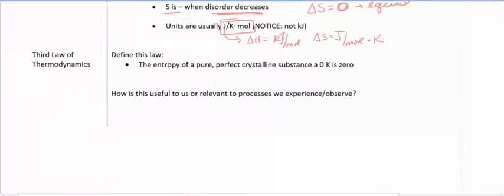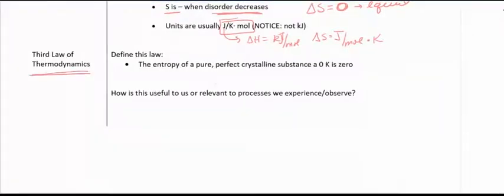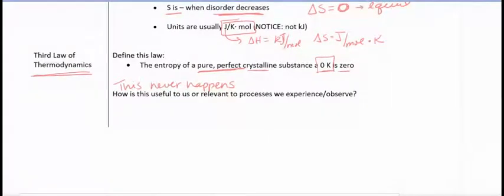The third law of thermodynamics may not seem super important, but it turns out to be. It tells us that the entropy of a pure, perfect, crystalline substance at zero kelvin is zero. This is important because this never happens. We never have a situation where we are at zero kelvin's. So how is this useful if it's telling us about something that never happens?